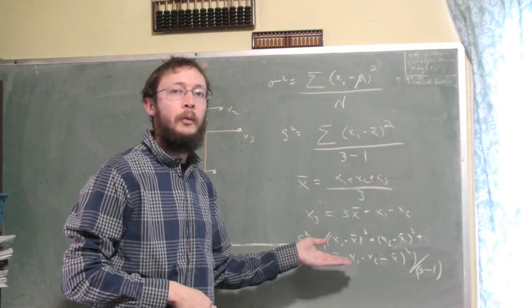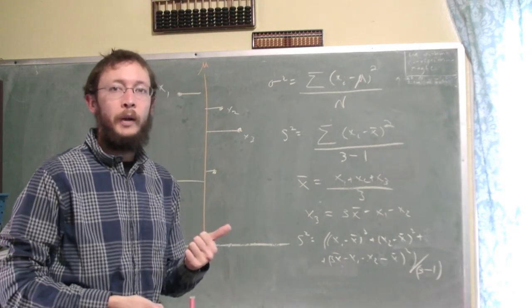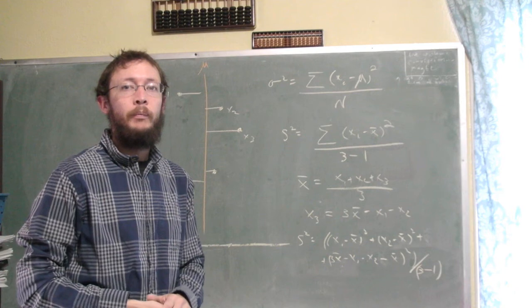And so basically you lost a degree of freedom. Instead of having three random variables, really you just have two. So every time you estimate a population parameter, you lose a degree of freedom.